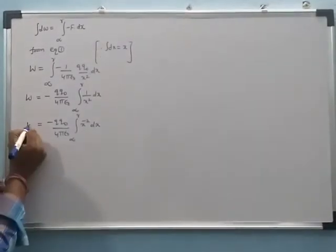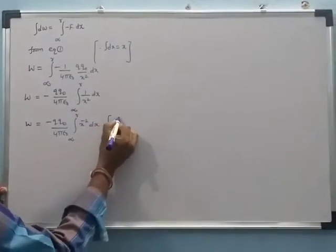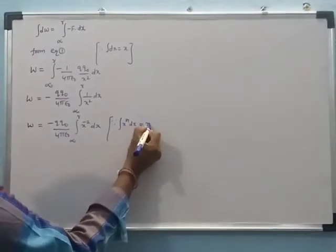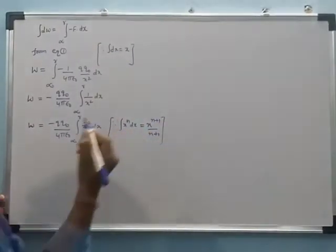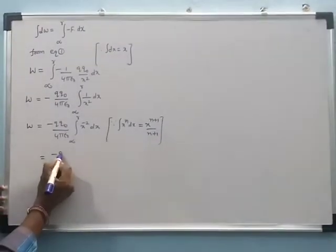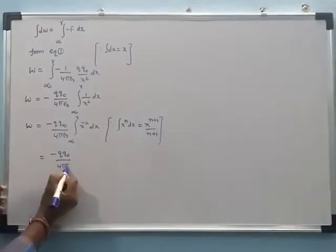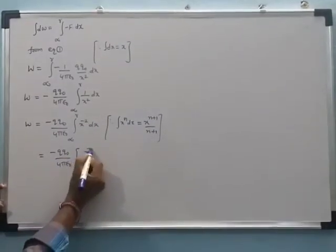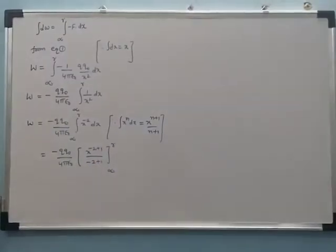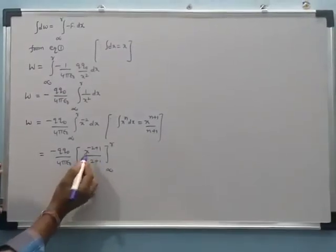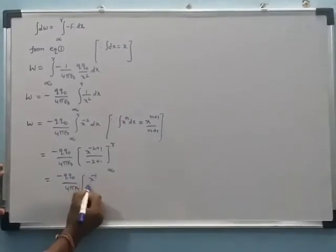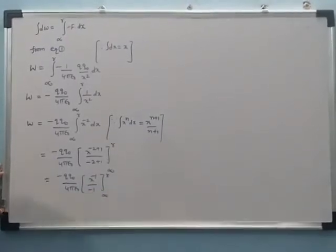Now we apply the basic integration formula: the integration of x^n dx equals x^(n+1)/(n+1). Here n is replaced by −2. So we get: minus (qq₀)/(4πε₀) into x^(−2+1)/(−2+1), evaluated from infinity to r. Here −2+1 equals −1, giving x^(−1)/(−1).